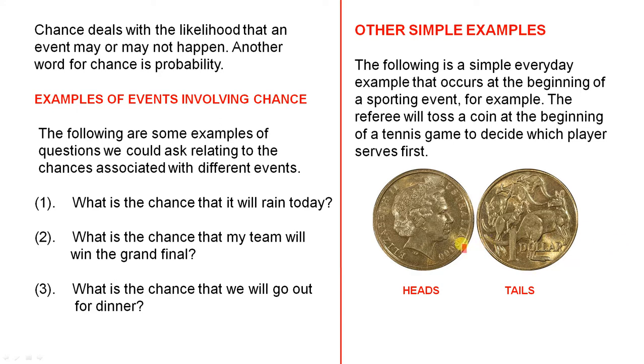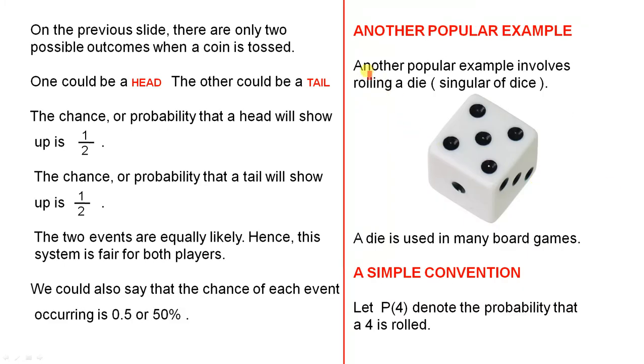So there are only two possibilities when the coin is tossed. On the previous slide there are only two possible outcomes when a coin is tossed. One could be a head, the other could be a tail. The chance or probability that a head will show up is 1/2. The chance or probability that a tail will show up is 1/2.